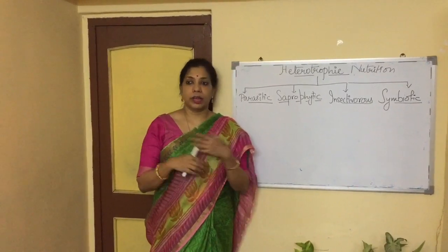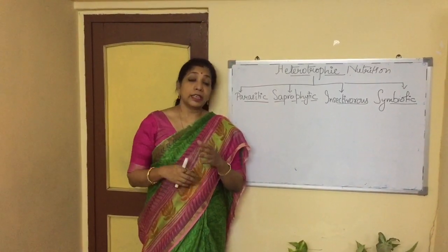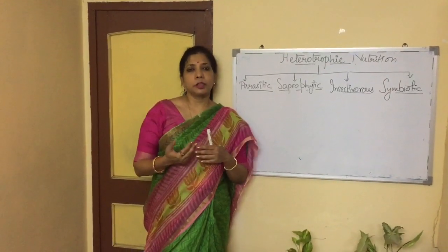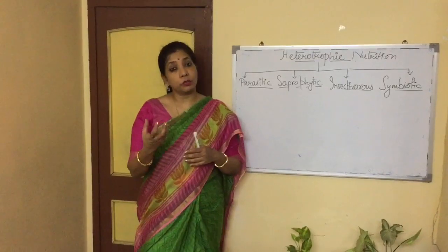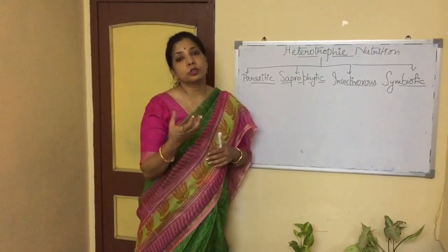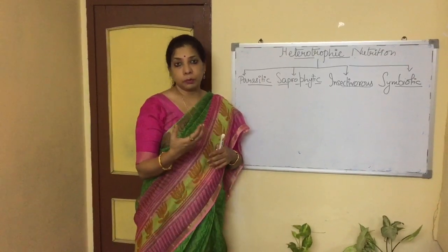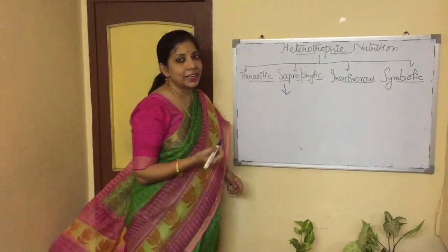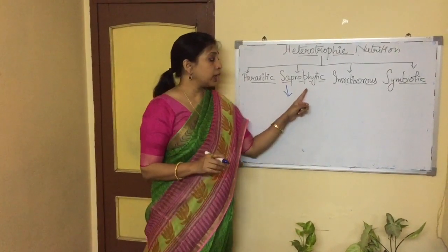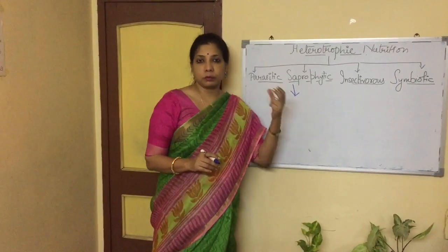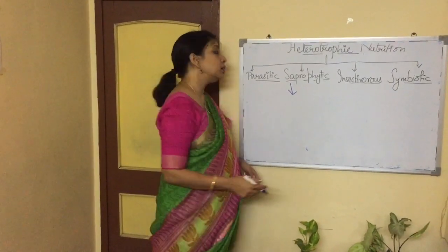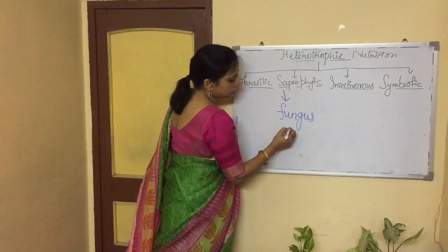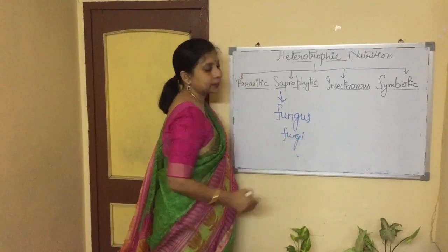Fungus is present in the environment. When it gets a suitable environment, it grows. During the rainy season, because there is moisture and a little warmth in the atmosphere, that is the most suitable period for them to germinate. These are the saprophytes. 'Sapro' means dead or rotting, so the living organisms which obtain their food from dead or decaying matter are known as saprotrophs. Fungus and mushrooms are examples.